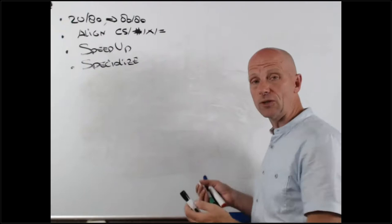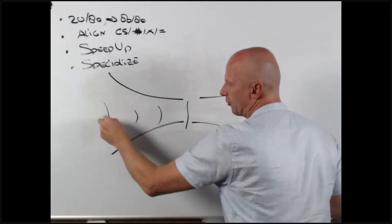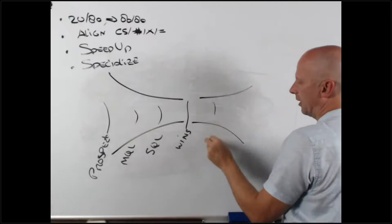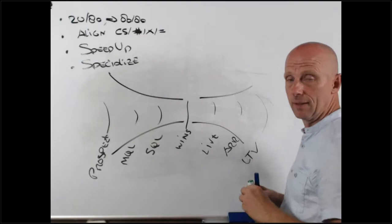In this case, I'm going to draw a very high-level data model. The data model works as follows: prospects turn into MQLs, turn into SQLs, turn into wins, turn into live customers. We generate annual recurring revenue or monthly recurring revenue as you please. We generate LTV. Make sense? Easy enough, right?